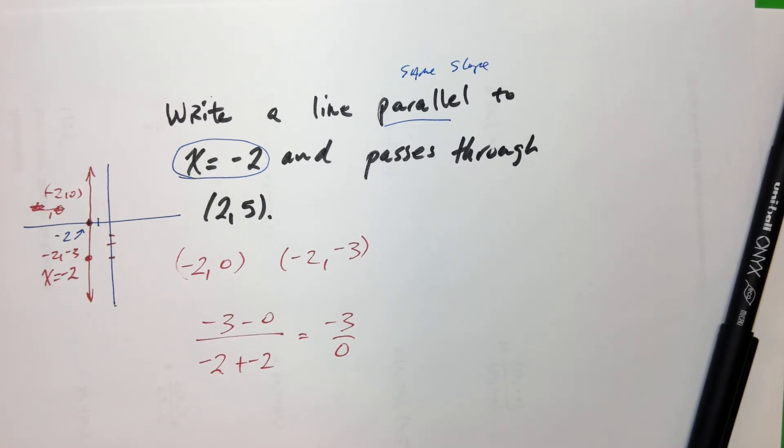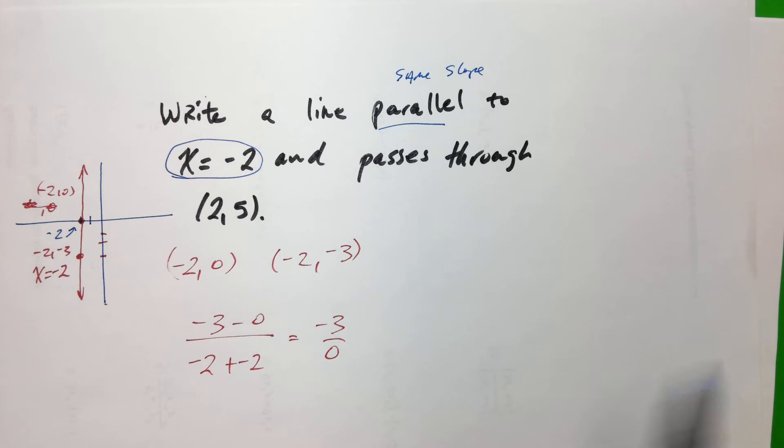And I don't know if you remember, but this is actually, like the way division works, it's actually saying 0 times what equals negative 3, and there's not a number. So what we say is it's undefined. Good so far? You were right to say this is a tricky problem.